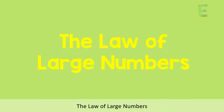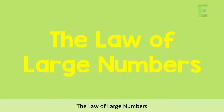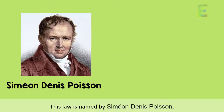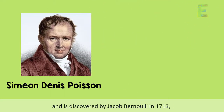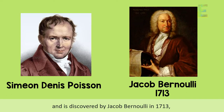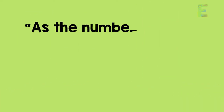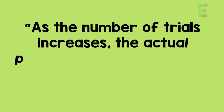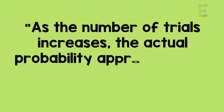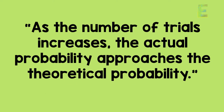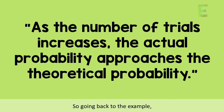The law of large numbers. This law is named by Siméon Denis Poisson and was discovered by Jacob Bernoulli in 1713. It states that as the number of trials increases, the actual probability approaches the theoretical probability.